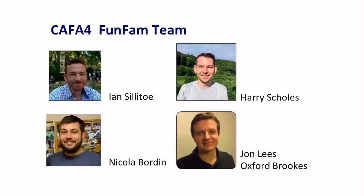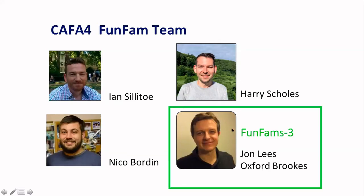I want to mention all the people in the team first. Ian and Nicola generated all the functional family information and domain family information we use. They also had their own cascade model I'll explain later. Harry included network data with the functional family information, and the person I want to concentrate on for this talk — because we were asked to talk about FUNFAMS3 — is John Lees, who was a researcher in my group until a couple of years ago, moved to Oxford, and has collaborated with us using the functional family data.